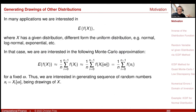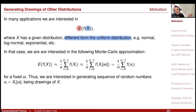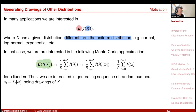In many applications we are interested in performing this approximation — the expectation — but now with a random variable X that has a distribution different from the uniform distribution. For example, log-normal, exponential, gamma, or others. Going back to the original Monte Carlo approximation definition, we can approximate the expectation of a function f of X, where X has some other distribution, by a sequence of i.i.d. random variables x_i having the same distribution as X.